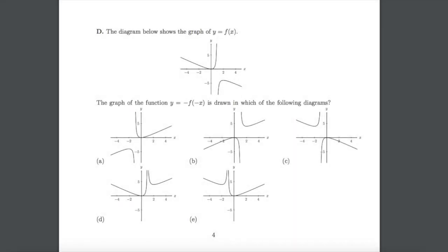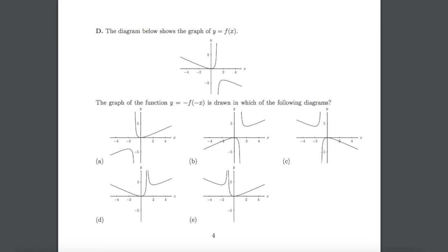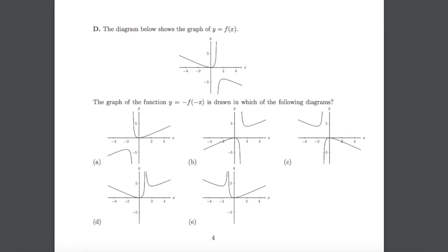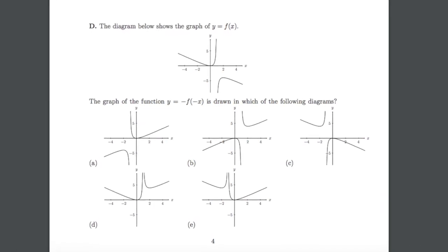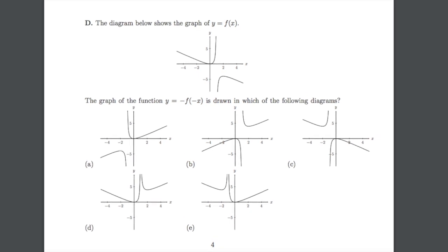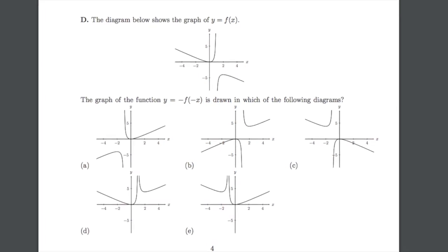Hey guys, in this video we're going to look at question 1D of the 2017 MAT exam. We are shown a graph of a function y equals f of x, and we're being asked to work out, out of the five possible answers, which one is showing the graph of y equals minus f of minus x.